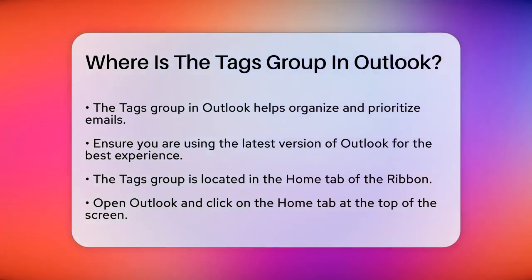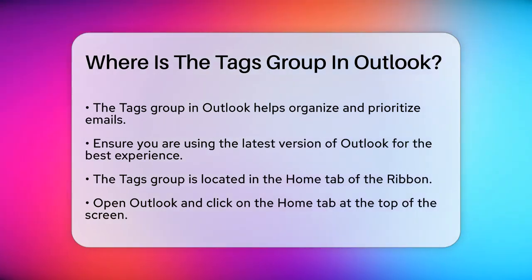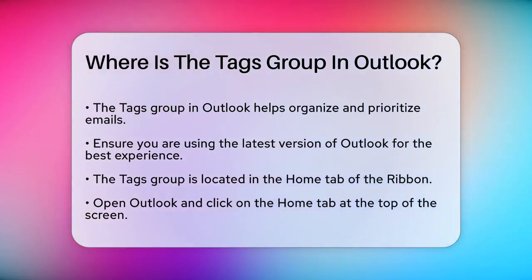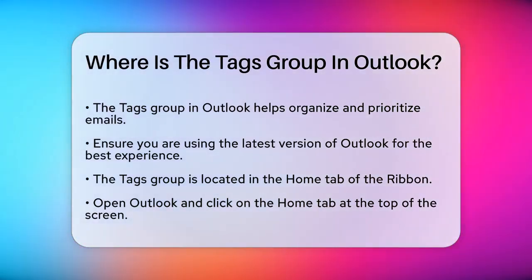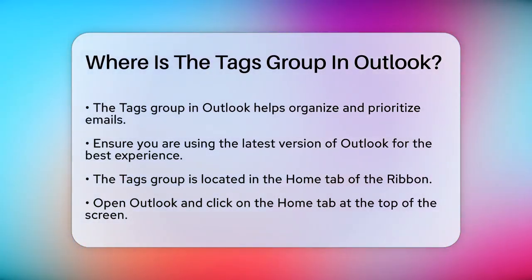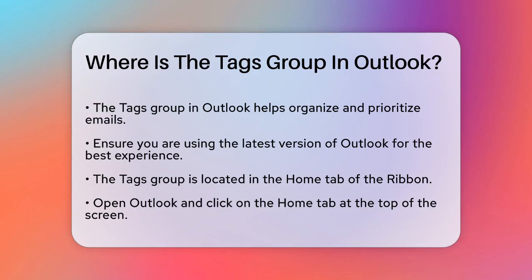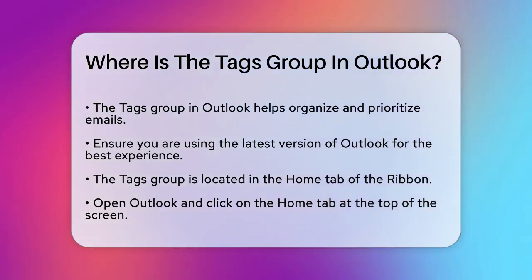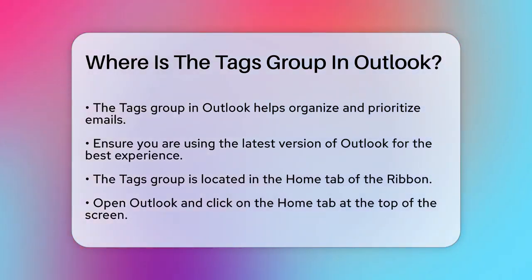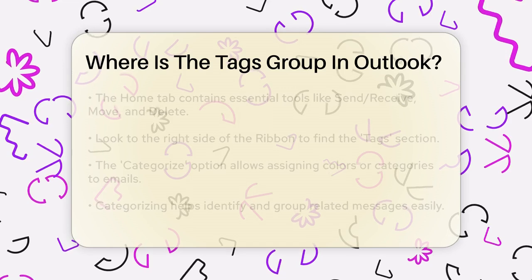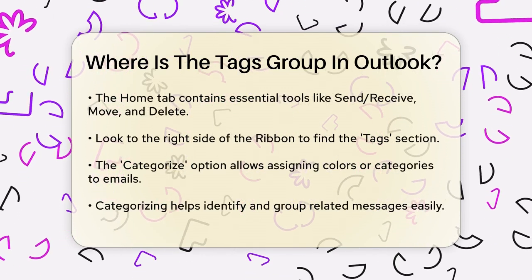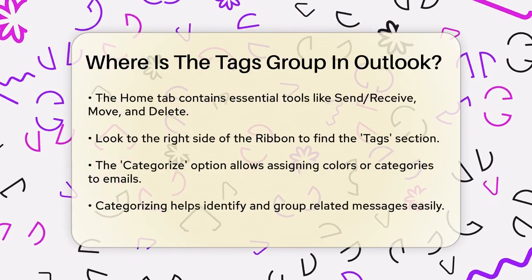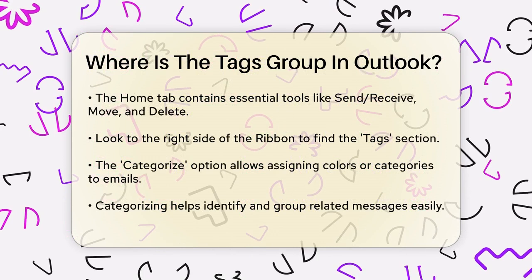In the most recent versions of Outlook, the Tags group is typically found in the Home tab of the ribbon. To locate it, open Outlook and click on the Home tab at the top of the screen. This tab is where you'll find most of the tools you use daily, such as Send, Receive, Move, and Delete.